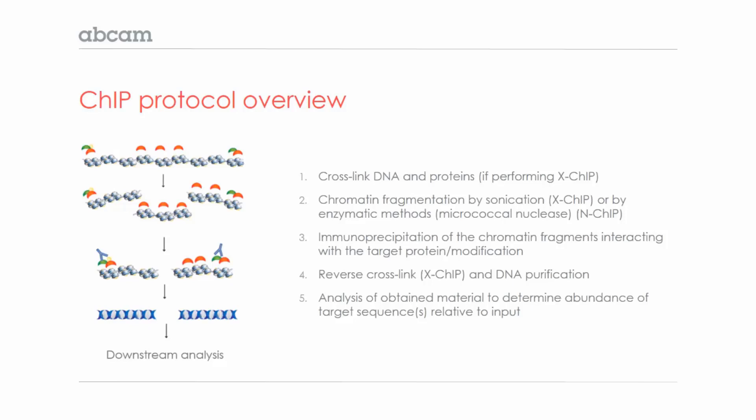Cross-links are then reversed if you're doing cross-linking ChIP, and the DNA can be purified for later analysis by PCR, hybridization to a microarray, or sequencing. The abundance of DNA pull-down can be compared to the input or starting chromatin amount.